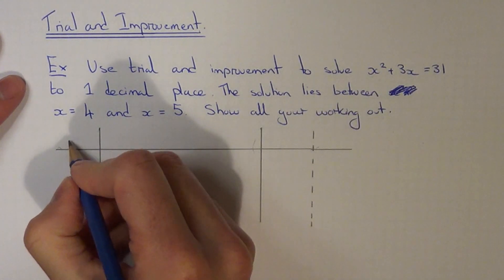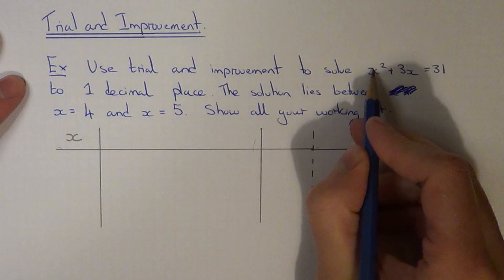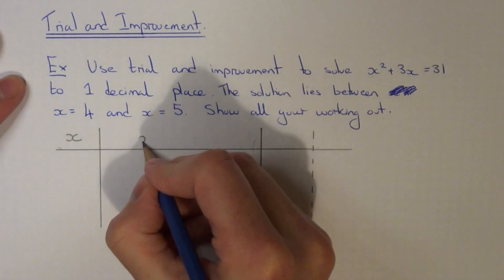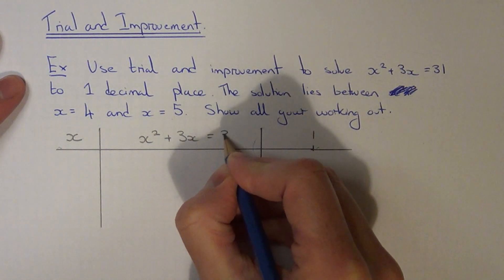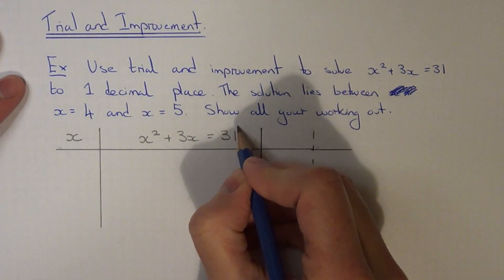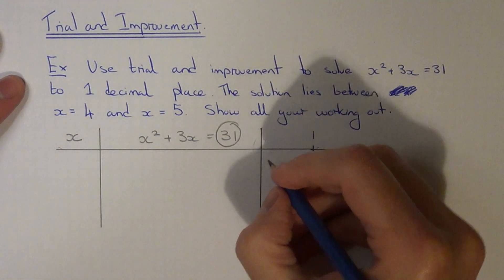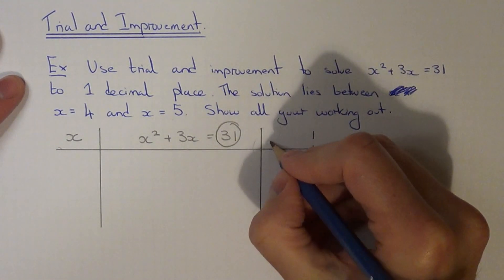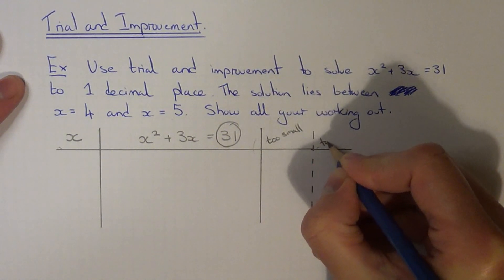In the first column you're going to have x. In the second column you're going to write your equation x squared plus 3x equals 31. I'm just going to circle the 31 because that's our target number. And in the final column we've got too small and too big.